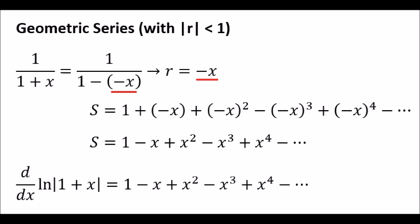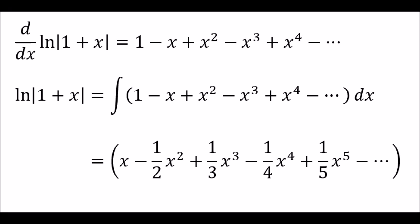For 1 over 1 plus x, we must substitute r equals negative x. That causes every other term to alternate sign. Similar to before, we integrate both the left hand side and right hand side. In fact, it looks almost identical except for the negative signs.